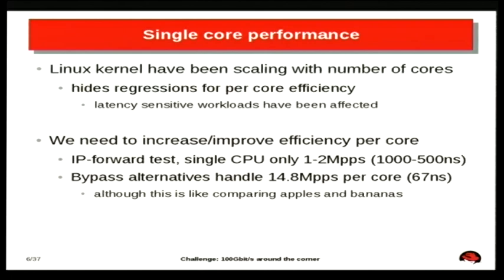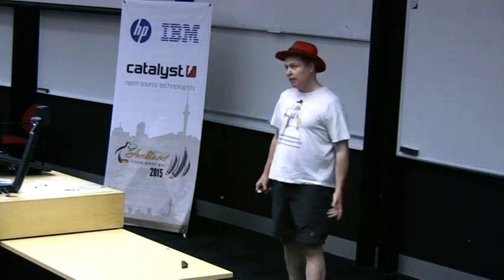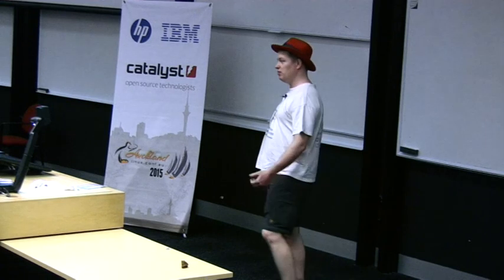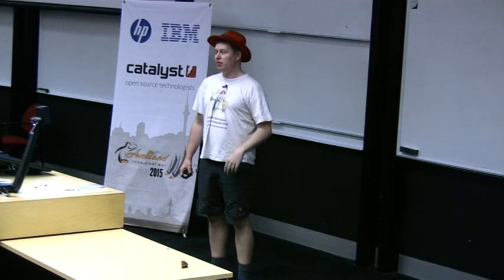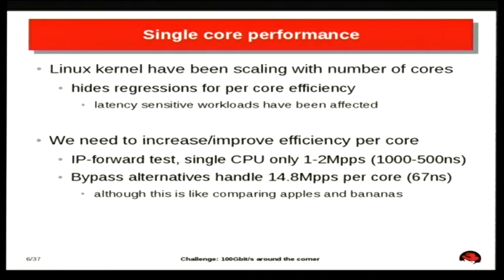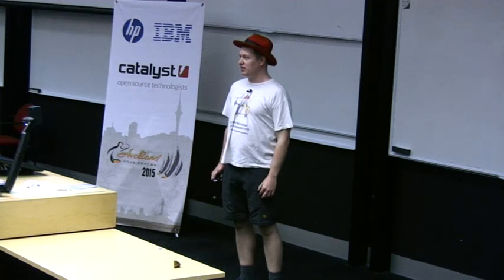My goal is to improve the efficiency per core. For example, if I do a single CPU test doing IP forwarding, I can only forward between 1 to 2 million packets per second. The bypass alternatives are at wire speed — 14.8 million packets per second. It's not a really good comparison because the network stack is obviously doing more than the fake benchmark where they just forward packets blindly, but the performance gap is so big that we should do something about it.